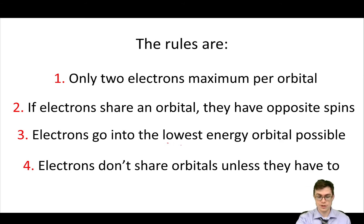Number three, the electrons want to go into the lowest energy orbital possible. That's really important. And number four, the electrons don't share orbitals unless they have to, because they're negative, right? And negative and negative, they kind of repel. So they don't want to be together unless they have to be.